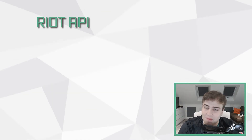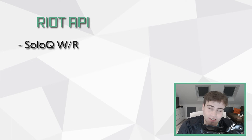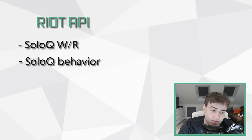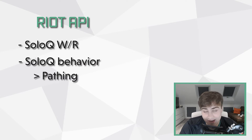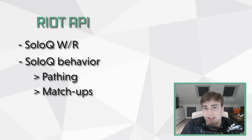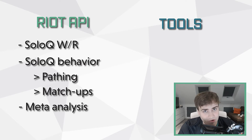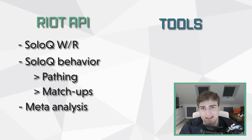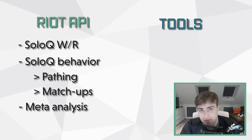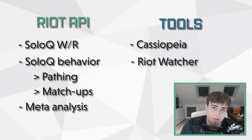For the Riot API, you can look at solo queue win rates on certain champions, and for a certain individual you might want to look at their solo queue behavior — where they prefer to gank on a certain champion, what matchups they like to play into, whether they usually win or lose certain matchups. Popular tools are Cassiopeia and Rightwatcher, and I also have my own open-source tool I've developed called Blitzcrank.